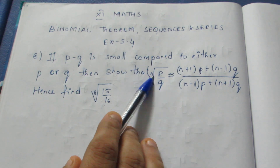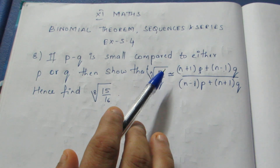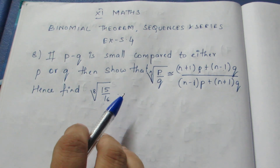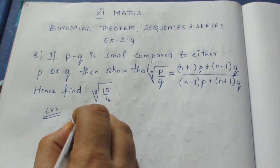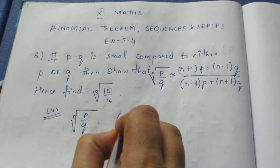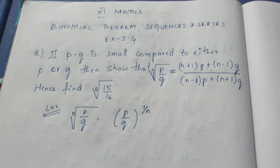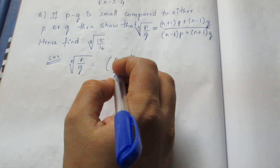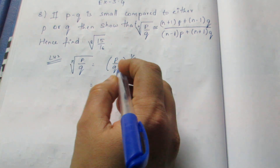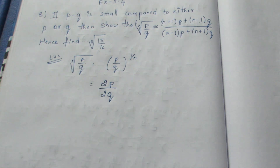We do this as an expansion. LHS is equal to the nth root of p by q, which is (p by q) to the power 1 by n. We use the power 1 by n. We are doing an expansion and we have two values. We multiply inside by 2p by 2q, so that p by q becomes 2p by 2q.